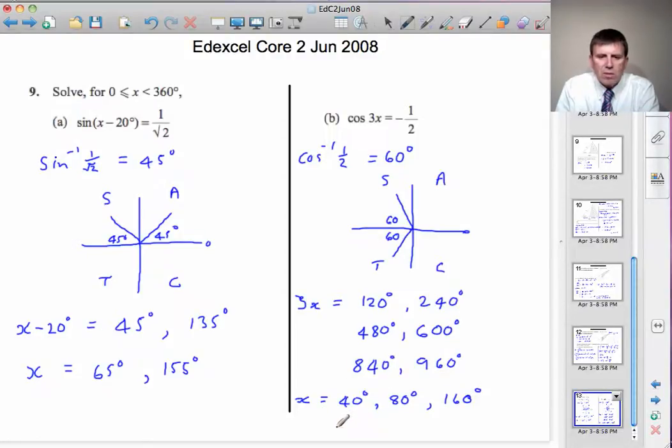600 divided by 3 will be 200 degrees. 840 divided by 3. Well, 3 goes into 8 twice, 2 left over. 3 into 24 is 8, so it's 280 degrees. And the last one, a third of that, will be 320 degrees.